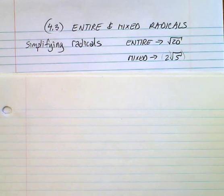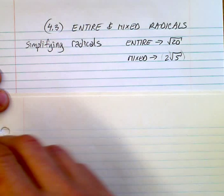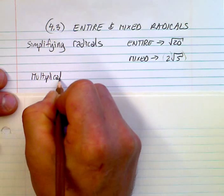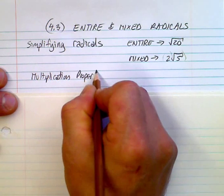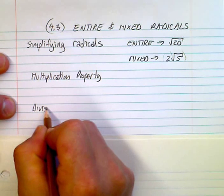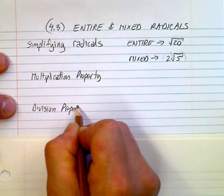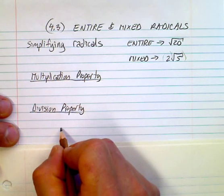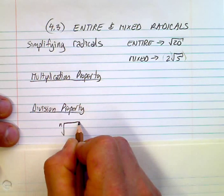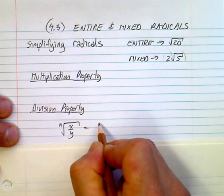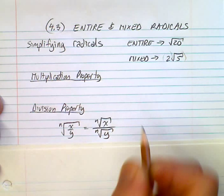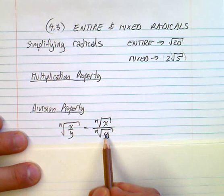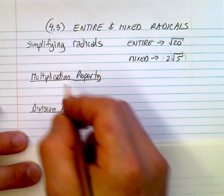Before we continue, I want to show you a couple of properties or rules. One is the multiplication property and one is the division property. The division property says that the nth root of x over y equals the root of x over the root of y — you can split them up. This is a two-way street: you can go either direction, as long as the index is the same.